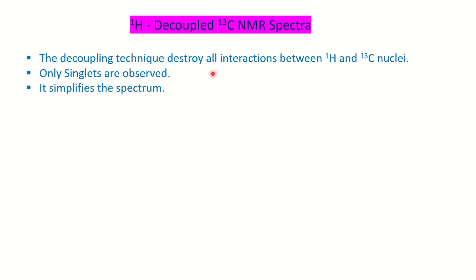First we will learn about the proton decoupled carbon-13 NMR spectrum. In this technique, both proton and carbon are NMR active and will couple to each other. Since organic molecules are made up of carbon and hydrogen, the spectrum becomes very complex. To simplify it, we decouple the coupling between proton and carbon so that we get only singlets for the different kinds of carbons present in the molecule.